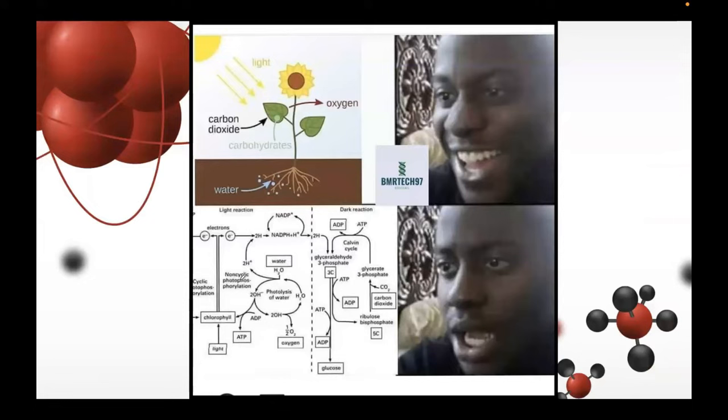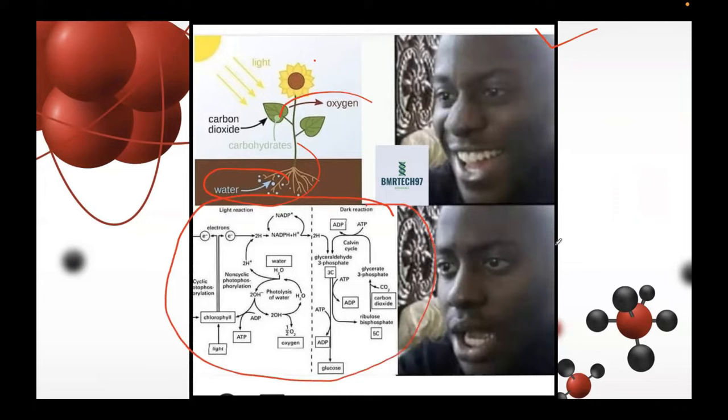This is a meme I saw on Facebook. When we were in grade school, we only had basic knowledge of photosynthesis — that a plant absorbs light, absorbs carbon dioxide, and uses water to produce oxygen. That was it, just the basics. But when we entered Medical Laboratory Science, we learned that the process of photosynthesis is actually much more complex.